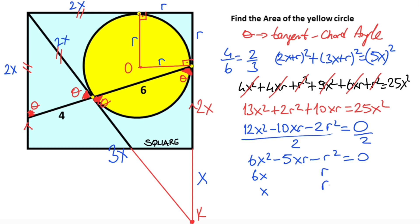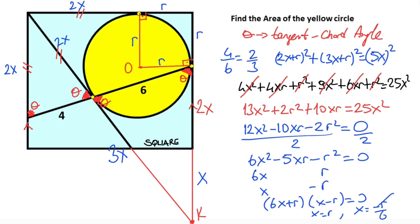Let's factorize the equation: six x plus r, times x minus r, equals zero. That means x equals r — and we know x cannot be negative, so we cancel the other solution. Therefore x equals r.